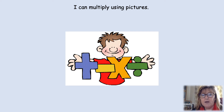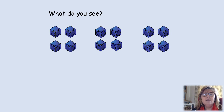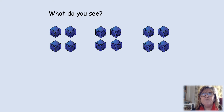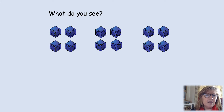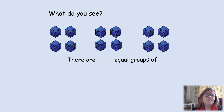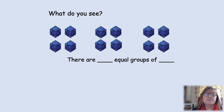We're going to be multiplying using pictures to help us. What do you see here? Pause the video. If there's somebody for you to talk to, talk to them. Otherwise, have a little think. There are some equal groups. How many equal groups are there? There are three equal groups of how many? Four in each group. There are three equal groups of four. Well done.